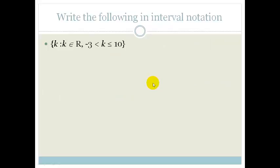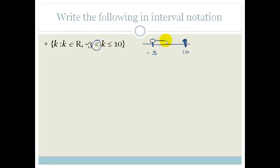Now let's write the following in interval notation — we're going to do it the other way. A nice easy way is to do your number line. We've got from minus 3 to 10. There is no equal sign for minus 3, so that's an open bracket. But we are making 10 equal, so that's a closed bracket. We're going from minus 3 to 10, so if there's an open circle at minus 3 it's a curly bracket or parentheses, and we're going to 10, including 10, so a square bracket.